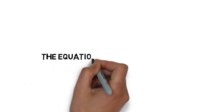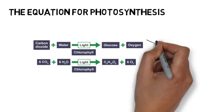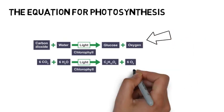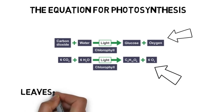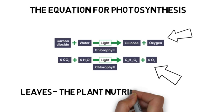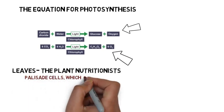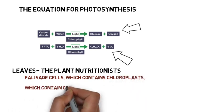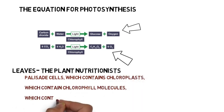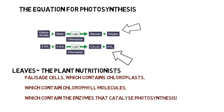The equation for photosynthesis. A leaf contains palisade cells, which contain chloroplasts, which contain chlorophyll molecules, which contain the enzymes that catalyse photosynthesis.